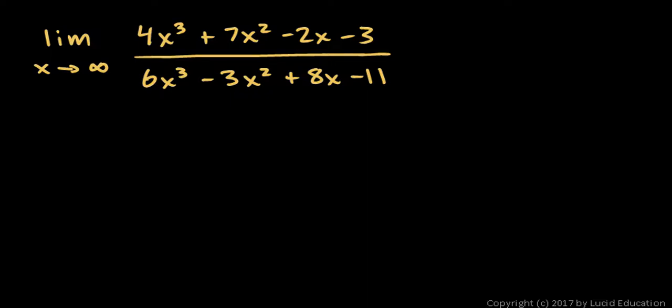Here we have the limit of what we call a rational function, one polynomial over the other. And this is the limit as X approaches infinity.